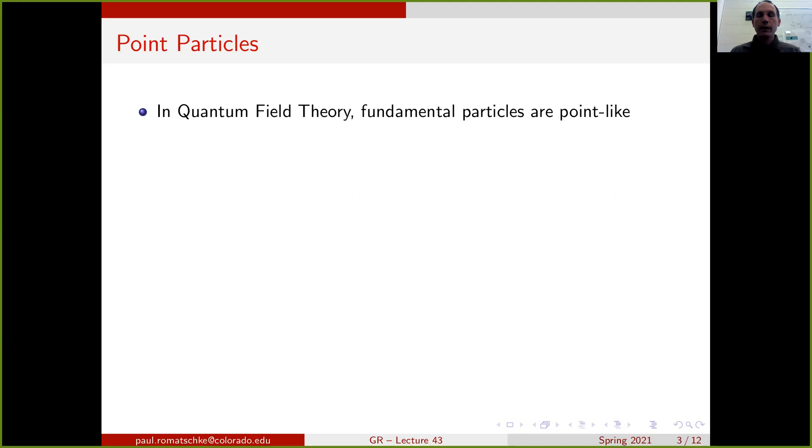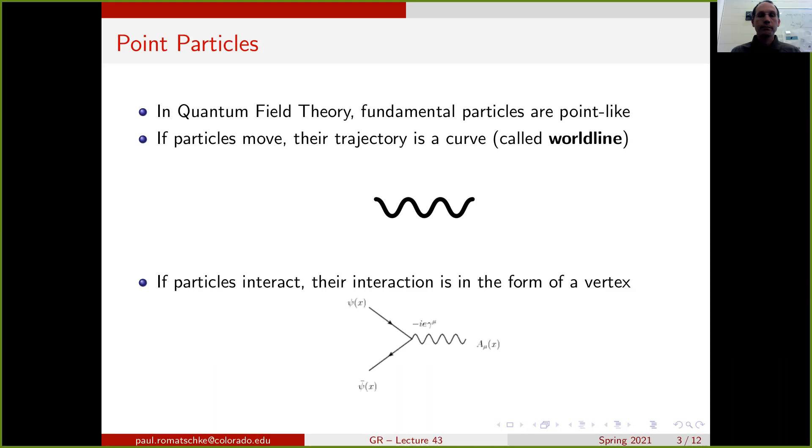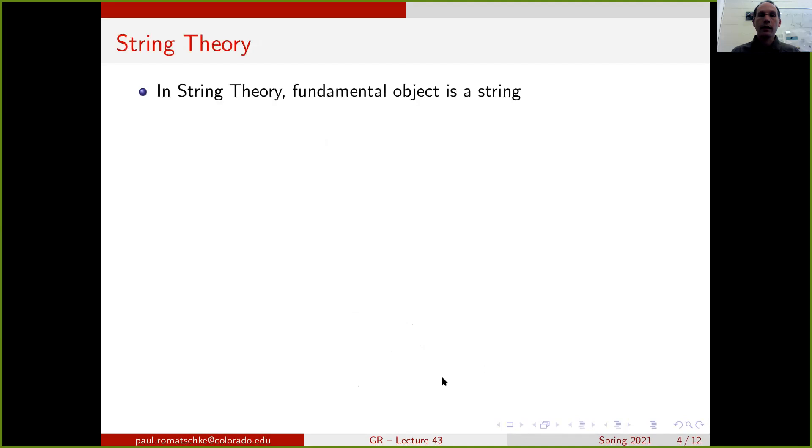In quantum field theory, the fundamental particles are point-like. If particles move, their trajectories are curves, also called worldlines. If particles interact, their interaction is in the form of a vertex. As an example, I have the vertex of electromagnetism here, where we have fermions and a gauge boson interacting through the form of a vertex.